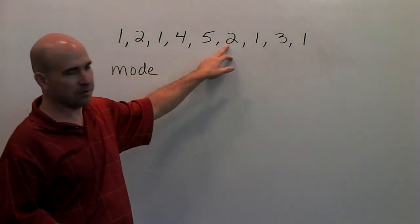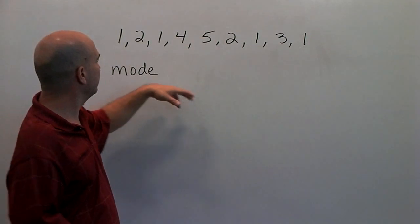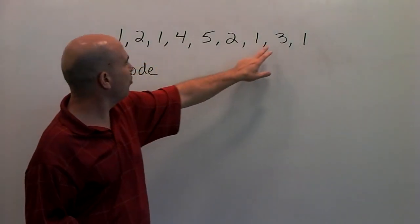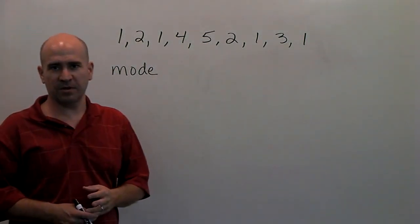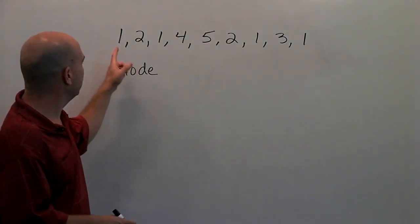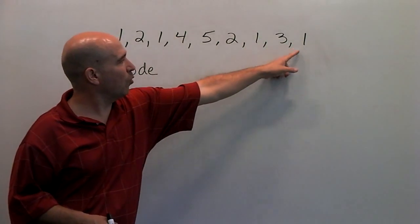one, two - two values of two, there is one three, one four, and one five. So the number that occurs the most often here is the number one.